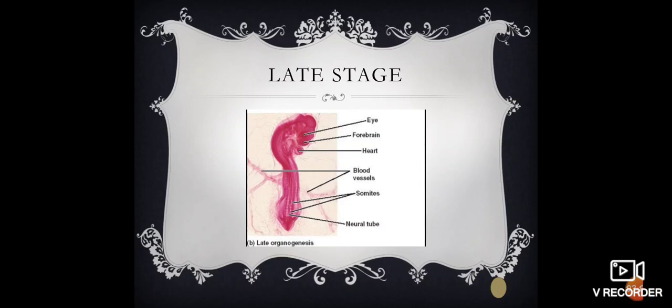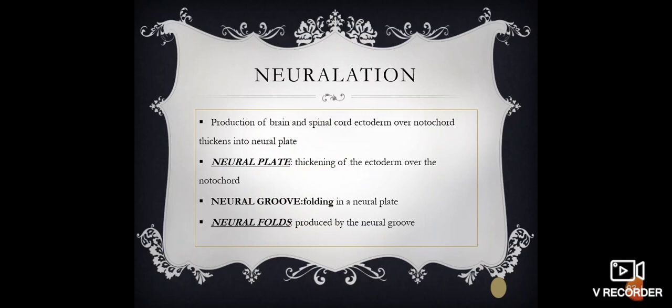Now, we move toward the late stage. During late stage, eye, forebrain, blood vessels are formed. I am going to talk about neurulation. What is neurulation? During neurulation, folding is formed. This folding is known as neural plate.